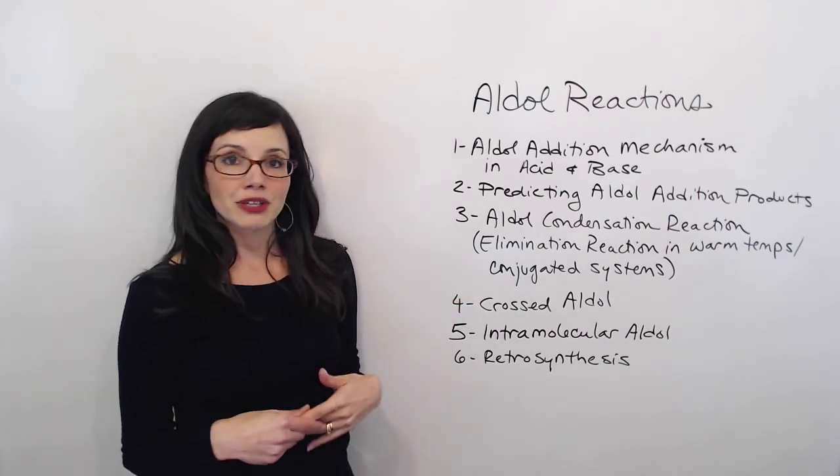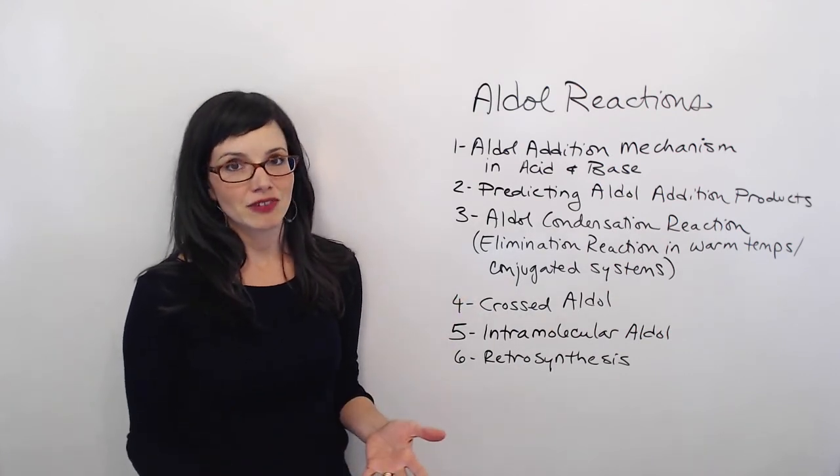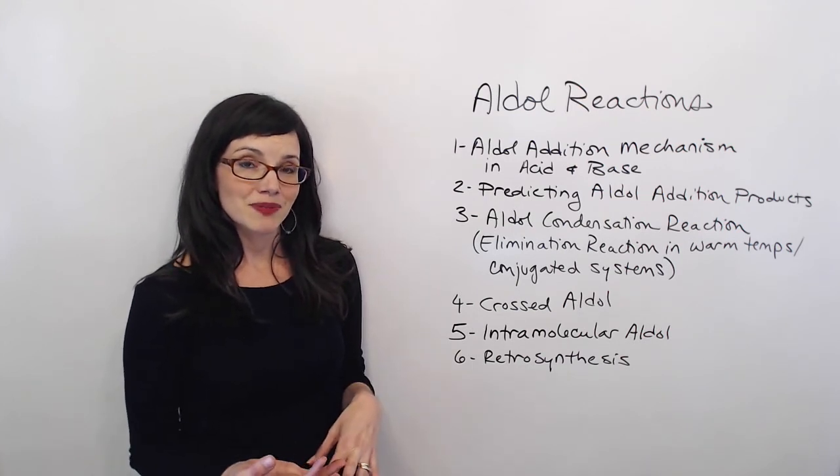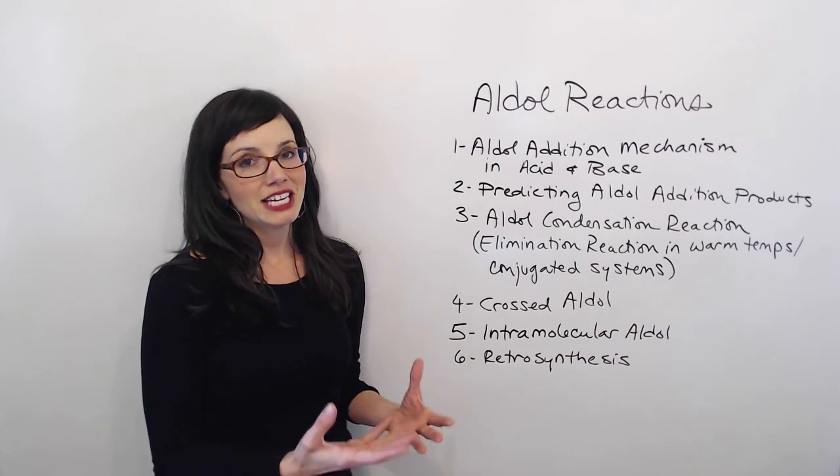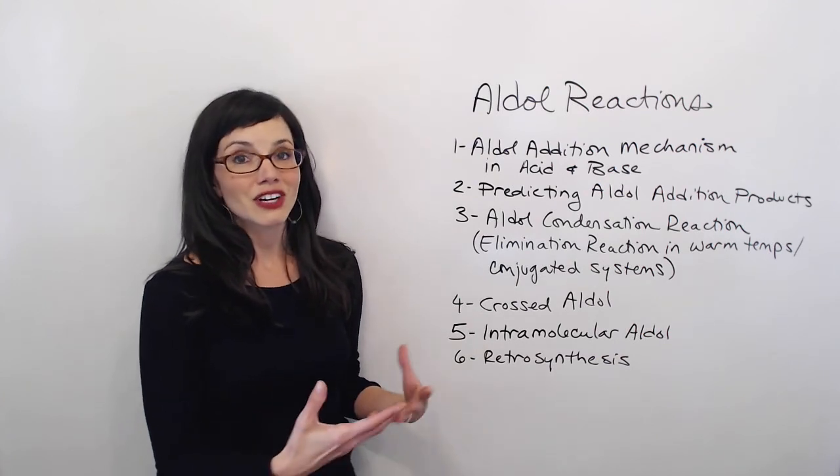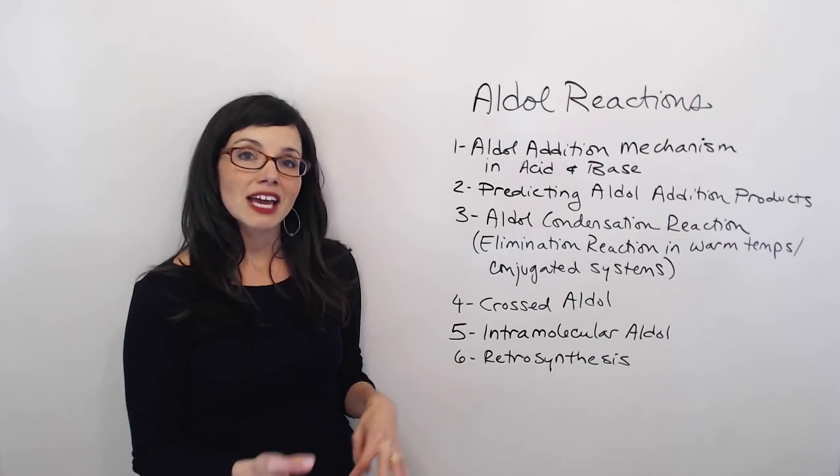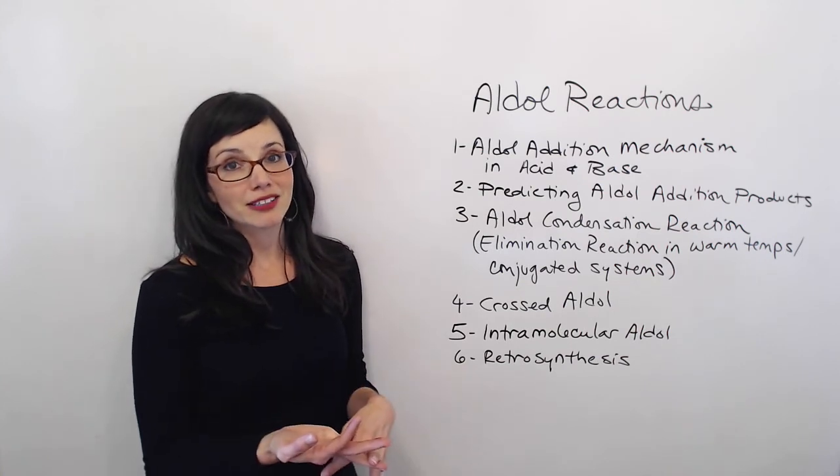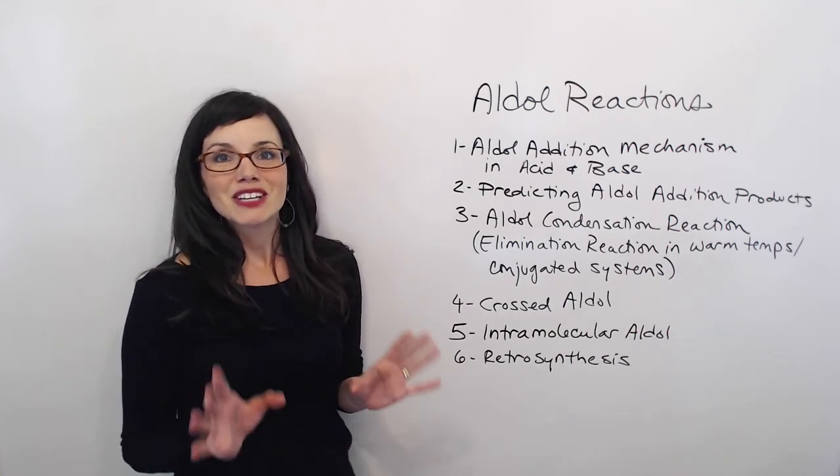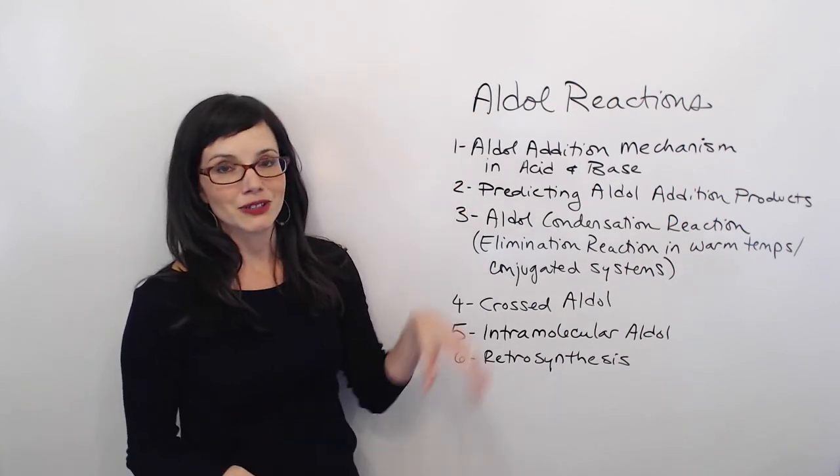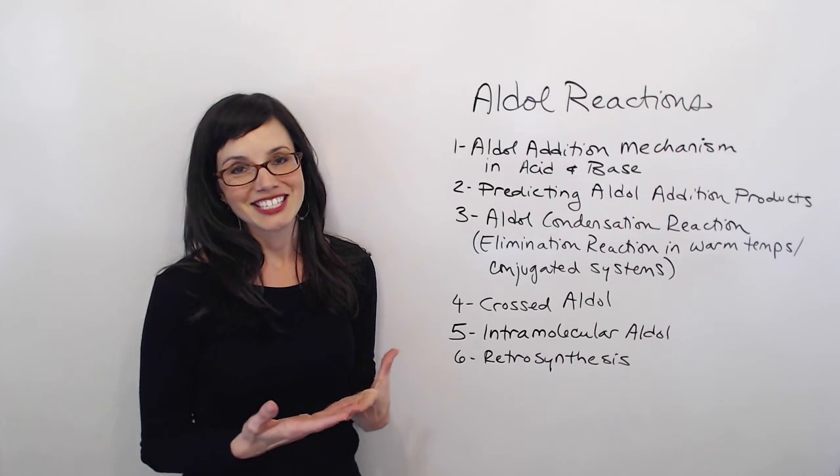In the first two videos, you learned about aldol additions, which occur in cold temperatures. In this video, you're going to learn about the full condensation reaction, which occurs in warm temperatures and conjugated systems. First, there's an addition, then there's an elimination step that causes the full condensation reaction. I'm going to teach you the mechanism and also the easy way to predict product. But beware, this video is not going to make a whole lot of sense to you unless you've seen parts one and two. So make sure you're watching this series in order.